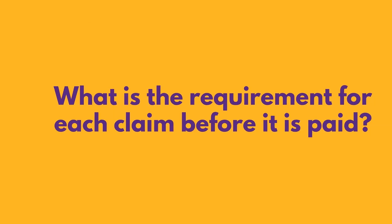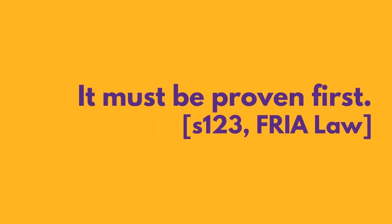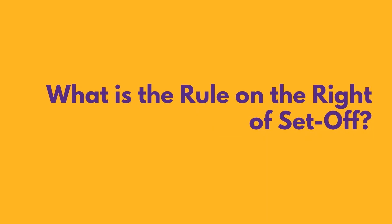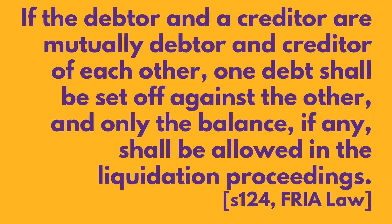What is the requirement for each claim before it is paid? It must be proven first. What is the rule on the right of set-off? If the debtor and the creditor are mutually debtor and creditor of each other, one debt shall be set off against the other and only the balance, if any, shall be allowed in the liquidation proceedings.